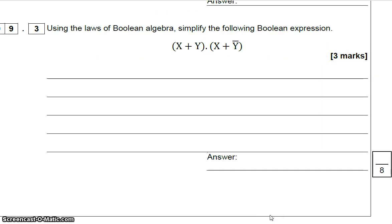Next example. This one we can see that we've got X or Y, and X or not Y. So we need to fully multiply out these brackets.